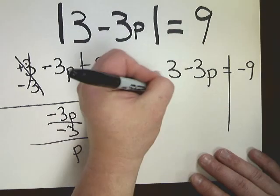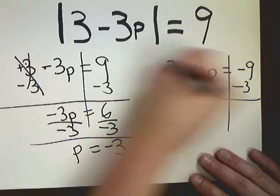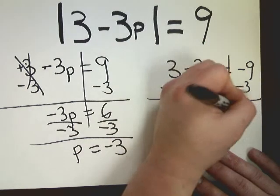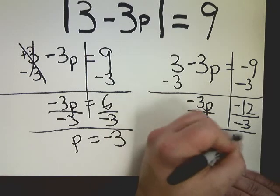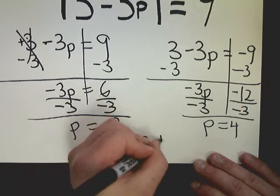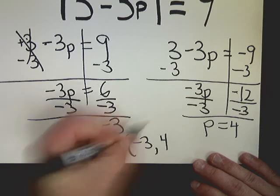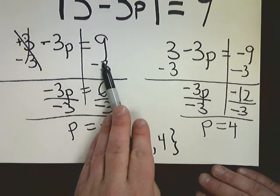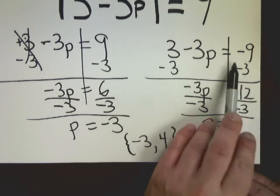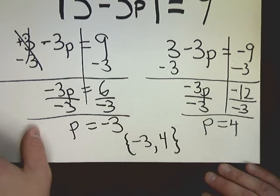On the other side, minus 3. Divide by negative 3. P is equal to 4. So my answer set would be negative 2 and 4. All I did was set it up so this one's positive, and this one, the answer part is negative. Kept everything in the absolute value the same, and I'm good.